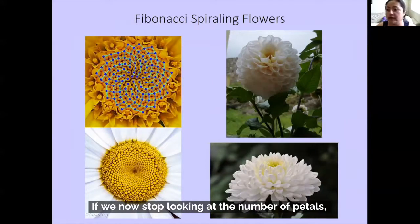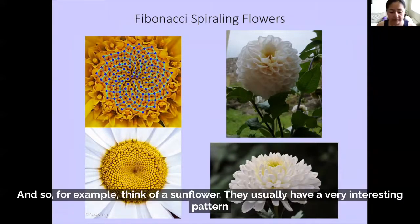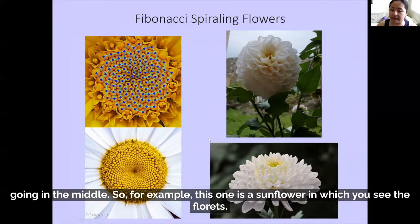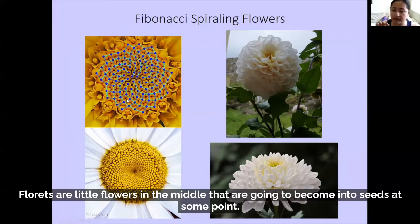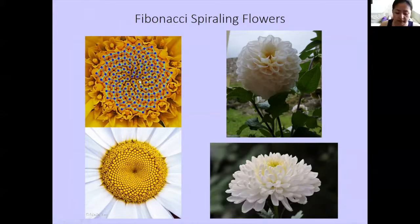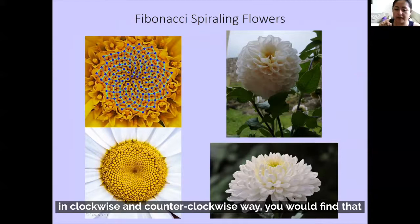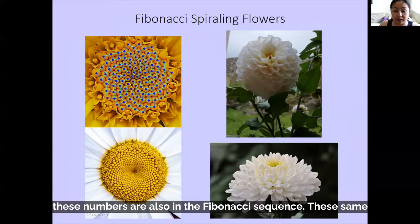If we now stop looking at the number of petals, we can notice something also in the middle of some flowers. Think of a sunflower — they usually have a very interesting pattern right in the middle. For example, in this sunflower you see the florets, which are little flowers in the middle that are going to become seeds at some point. Some of the spirals are arranged clockwise and others are counterclockwise. If you count the number of spirals in each direction, you'll find that these numbers are also in the Fibonacci sequence.